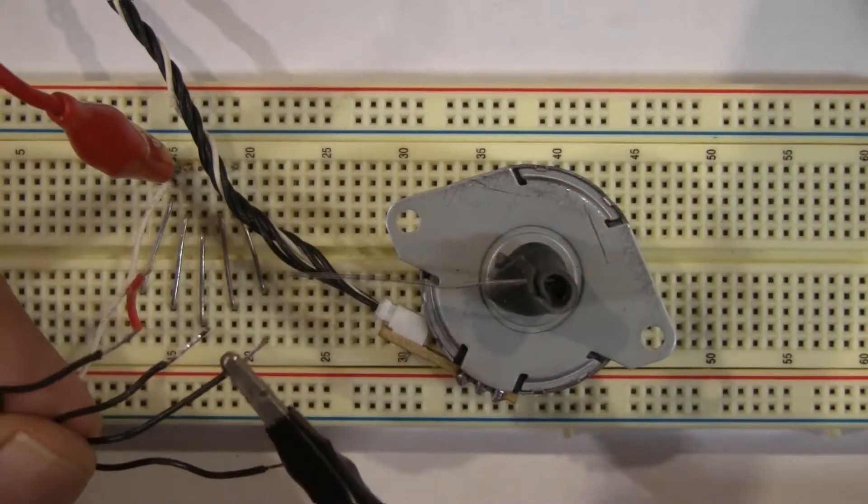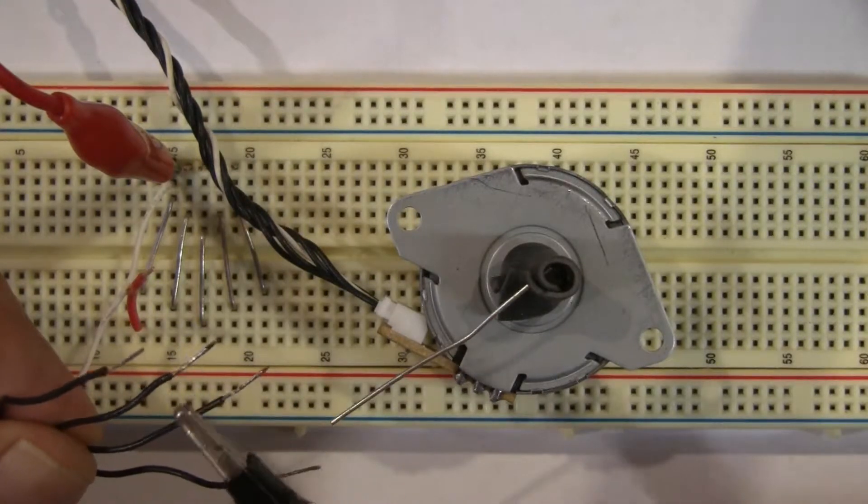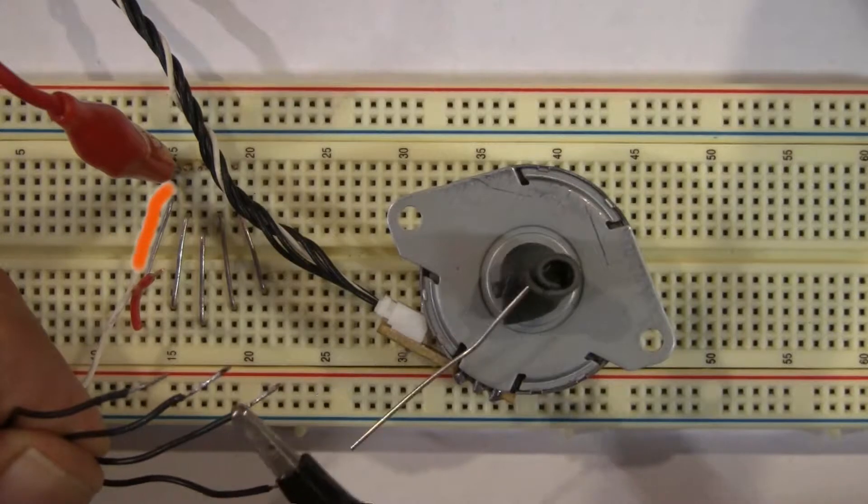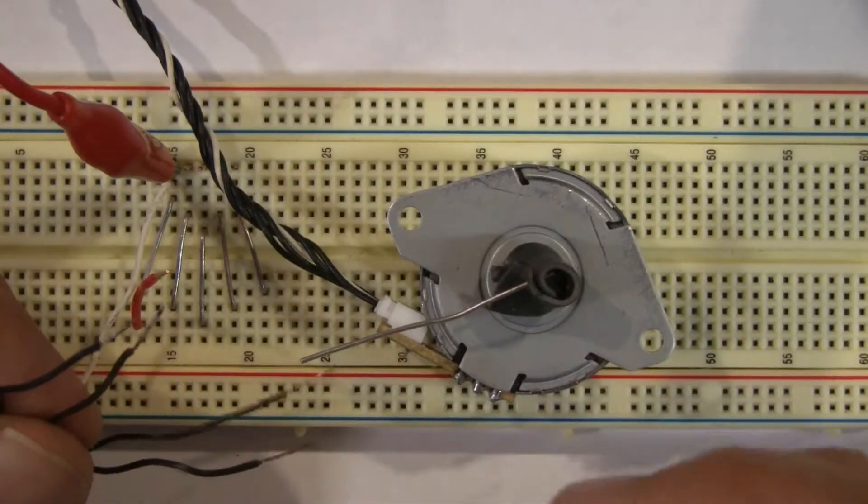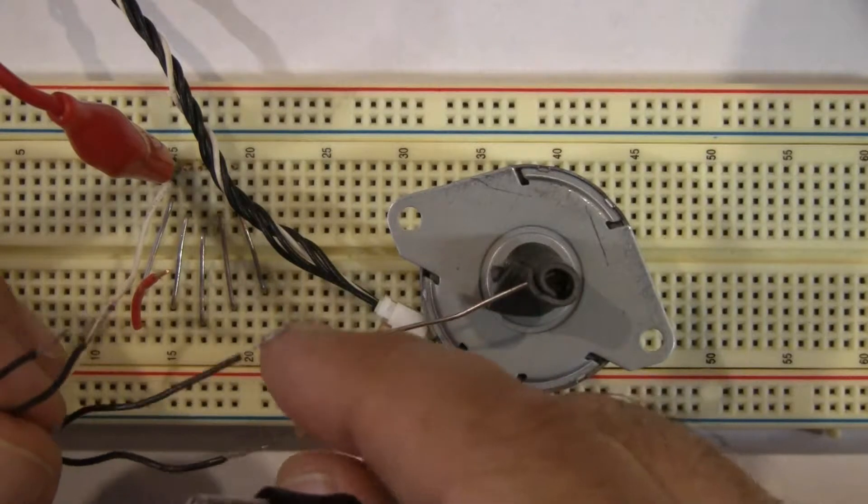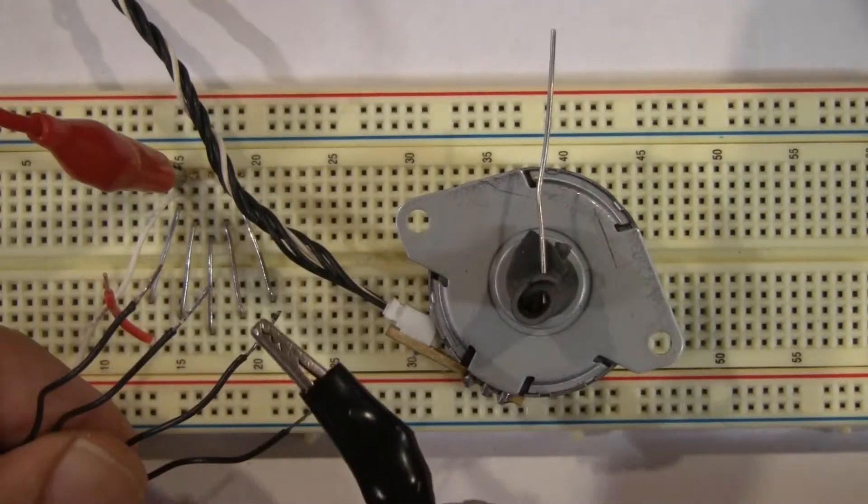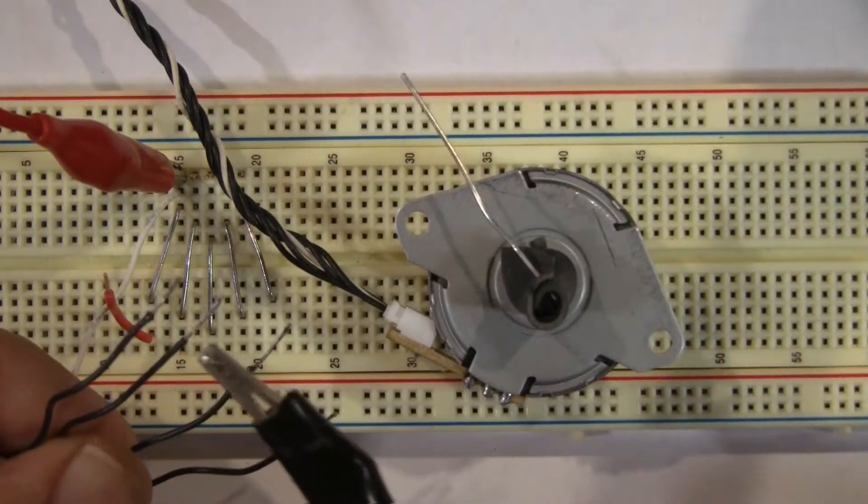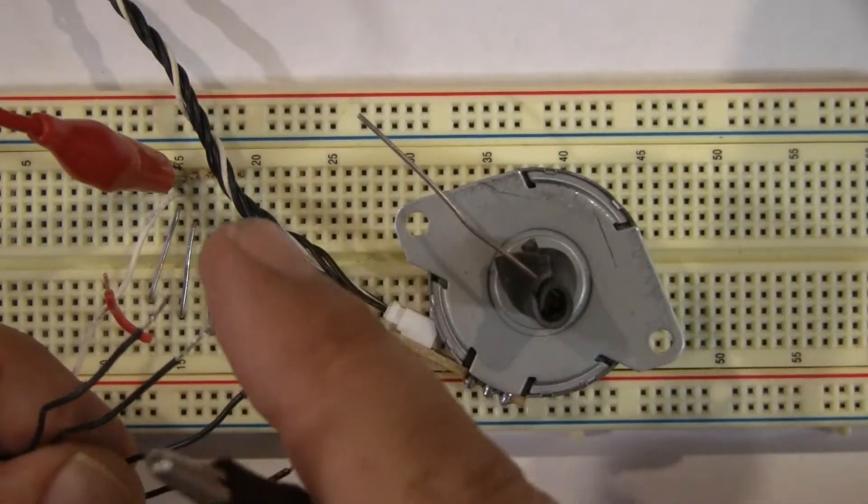Now, we have to find the sequence of the 4 ground cables. First, we have to connect the positive wire to 5 volts. Then touch one by one ground wire until the motor turns 4 times in the same direction. Then you know the right sequence.